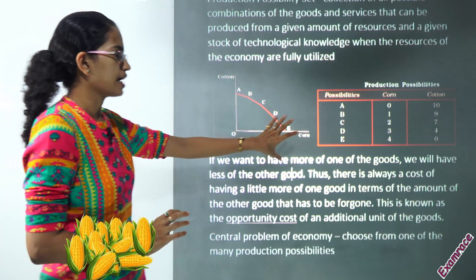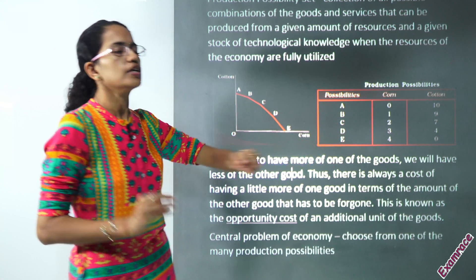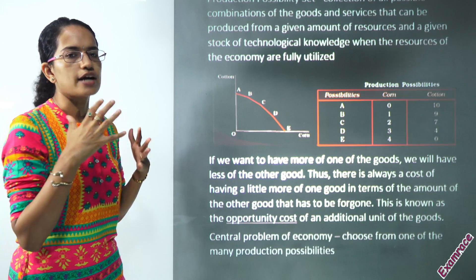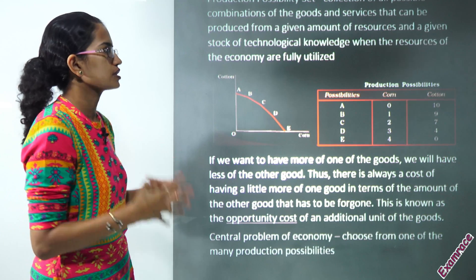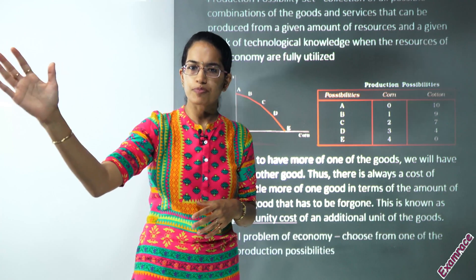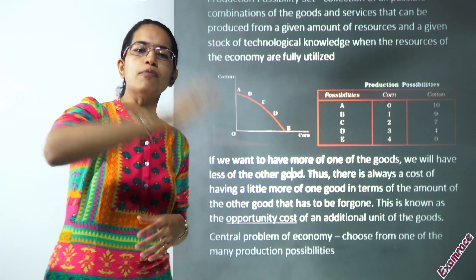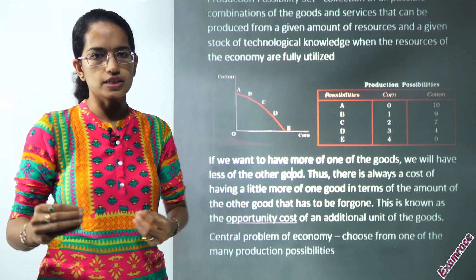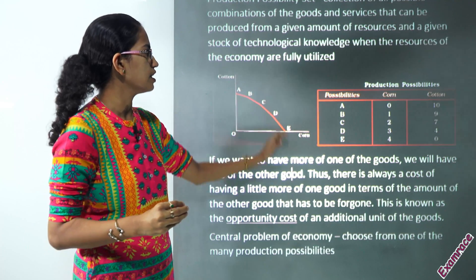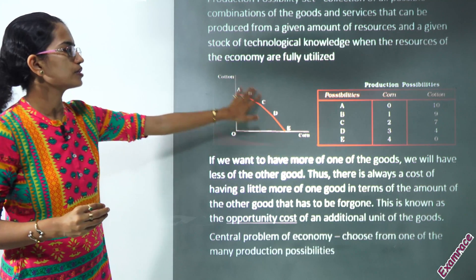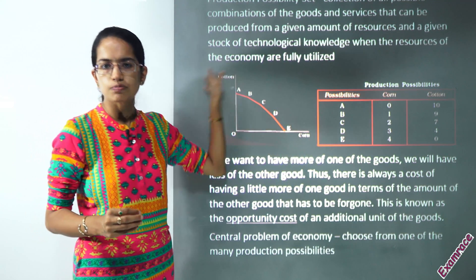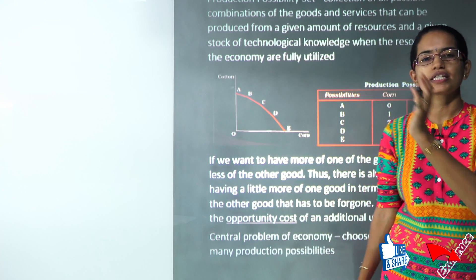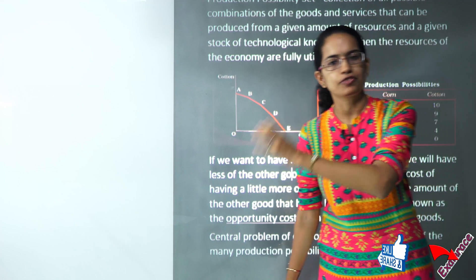So that's a quick understanding of the production possibility curve. With your limited or finite resources you have a possibility of production, and from that you decide the best combination that suits you. This curve talks about the various combinations or possibilities that could be there — that's what is known as the production possibility curve or production possibility frontier.